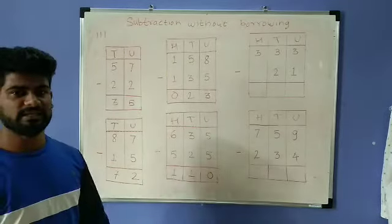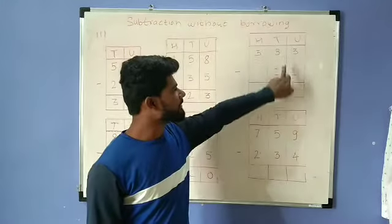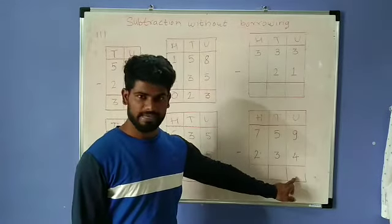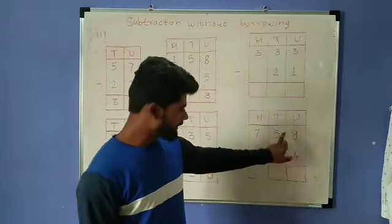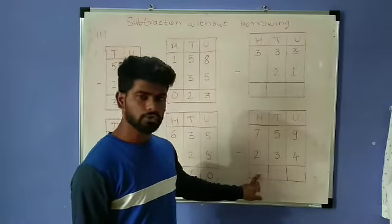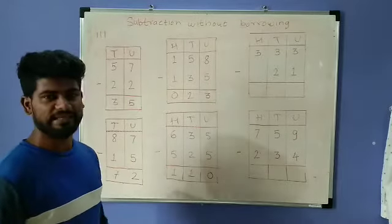Next example: 333 minus 21. Notice when there's 0 in the tens place, we write 0. 333 minus 21. You should solve: 3 minus 1 gives this answer, 3 minus 2 gives this answer. And 3 minus 0 - where there's 0 - as it is, write 3. Next: 759 minus 224. 9 minus 4, write the answer. 5 minus 2. And 7 minus 2.